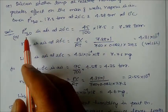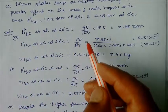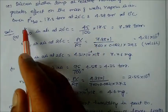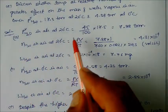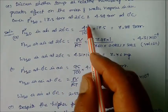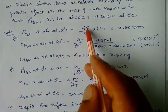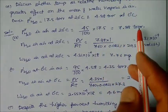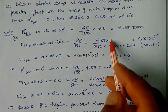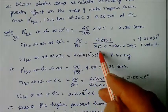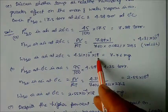RH = partial pressure of water / pure vapor pressure of water. At 22°C with RH = 45%: partial pressure of water vapor = 45% × 17.5 = 7.88 torr. Using PV = nRT with P = 7.88 torr and V = 1 liter, we find moles of water. Multiplying by molar mass of 18, we get approximately 7.76 milligrams of water.